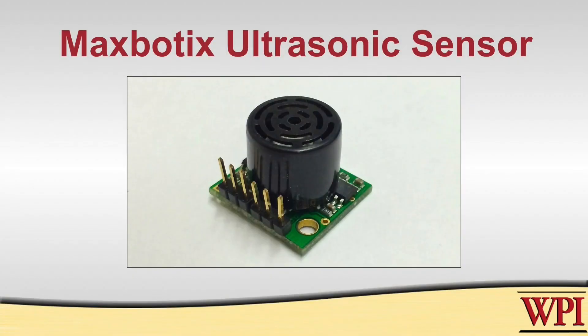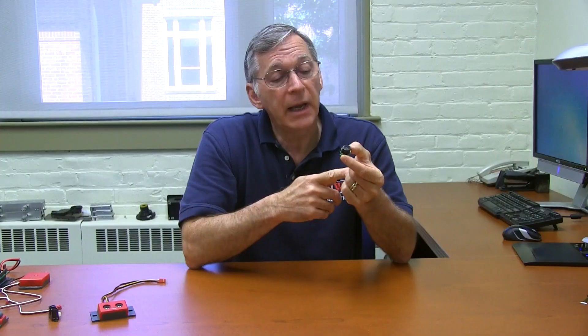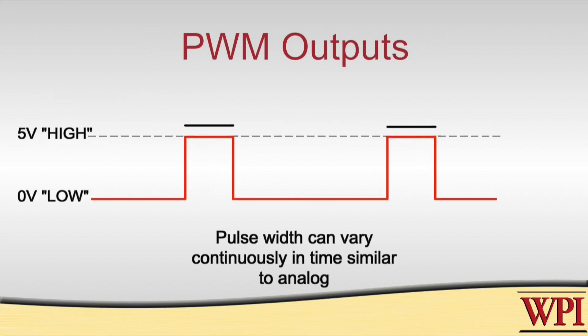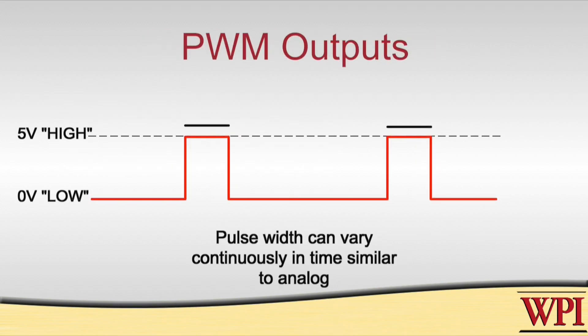The MaxBotix sensor is a more complicated device in that it actually has three different ways of outputting the range information to you. The simplest way is to treat this as an analog sensor. So one of the outputs is in fact a voltage that varies with distance. The second output that it generates is a PWM output. So we've talked about PWM previously, and in this case it encodes the distance into the width or the duration of the pulse of a PWM signal.